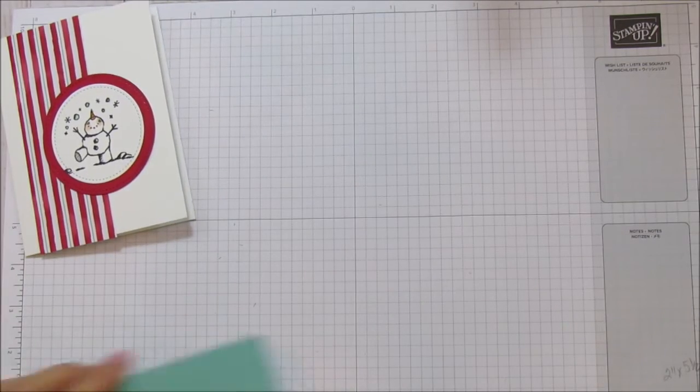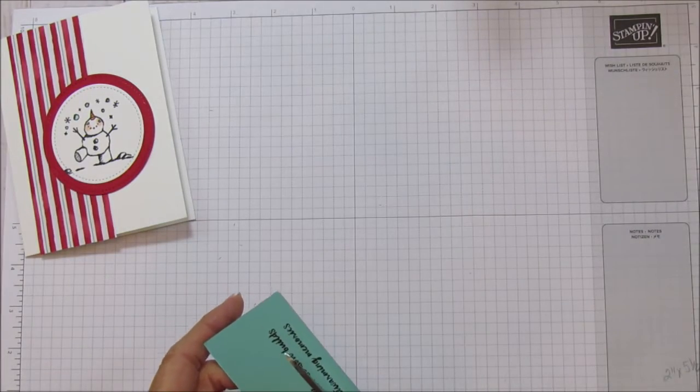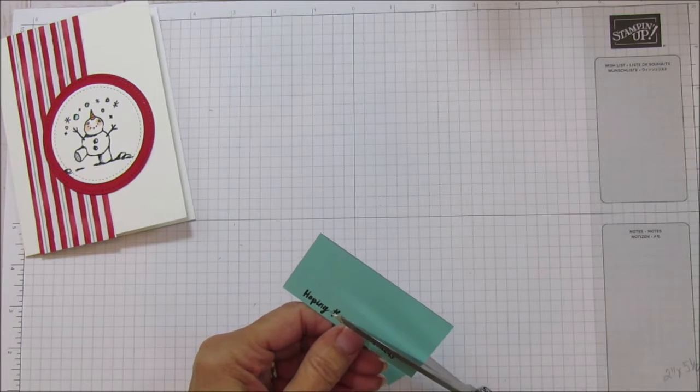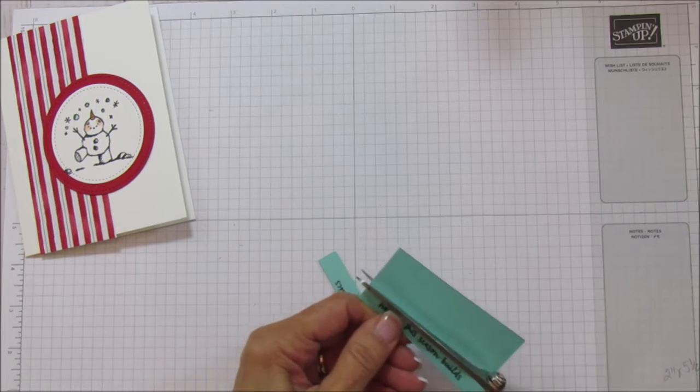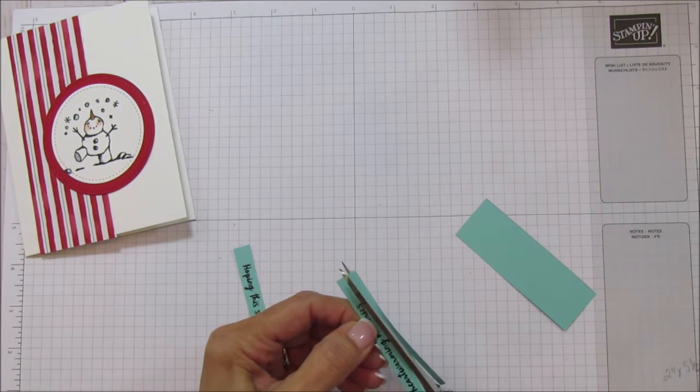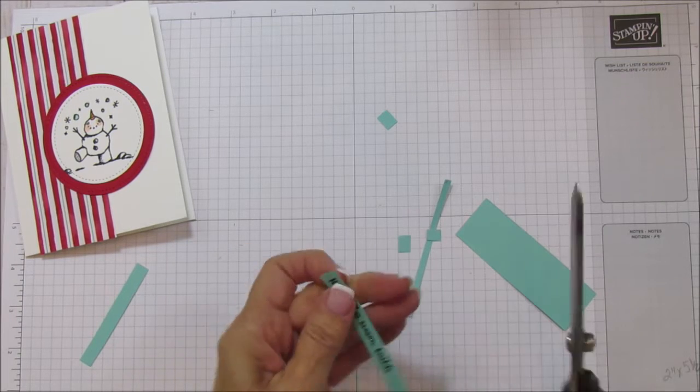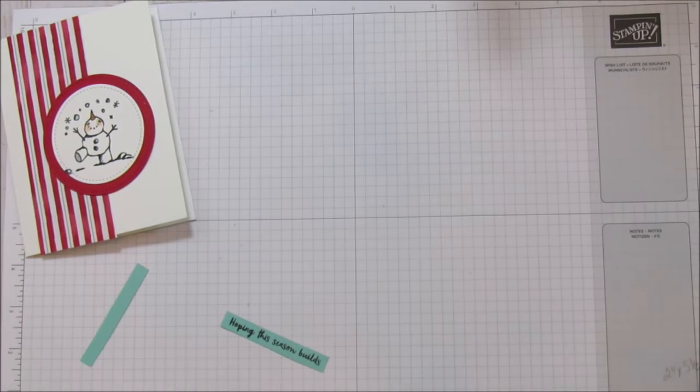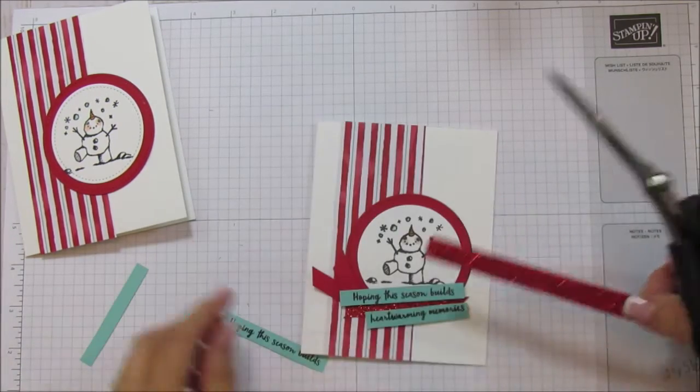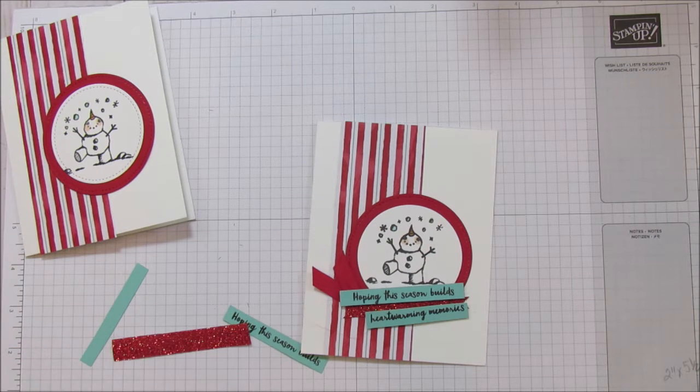And then we need to cut our sentiment. I do a better job cutting these if I have my larger scissors. So we're going to cut right down the middle on this one and separate the sentiment. It's just going to bring a little bit more interest to this card instead of just putting it on as one piece. So we are going to also cut our piece of glimmer paper, and that is about three inches, and we'll banner the ends on that.